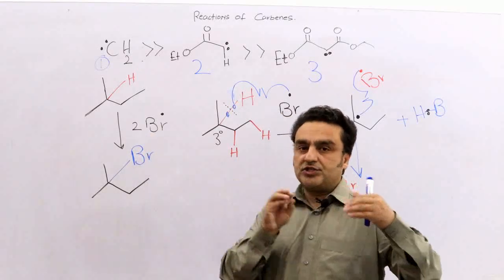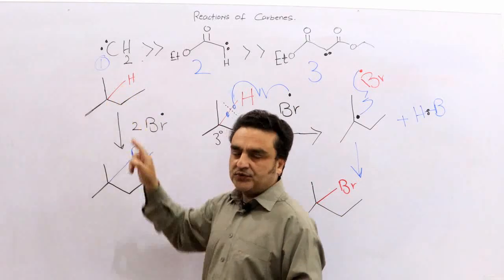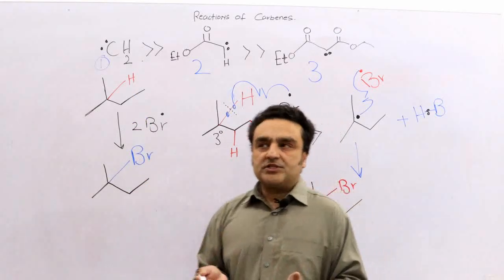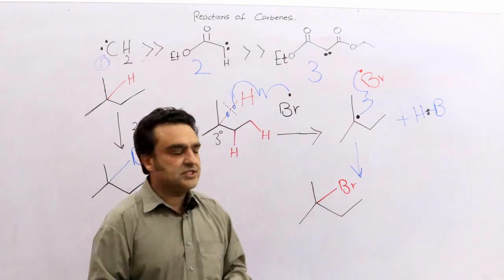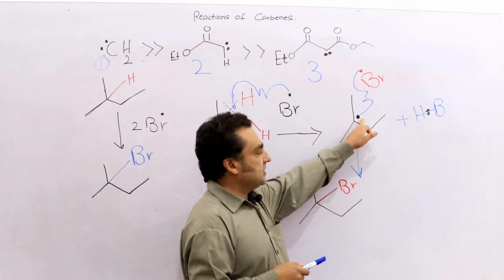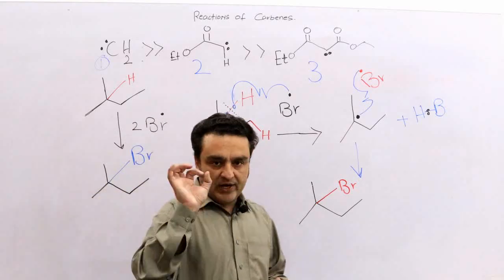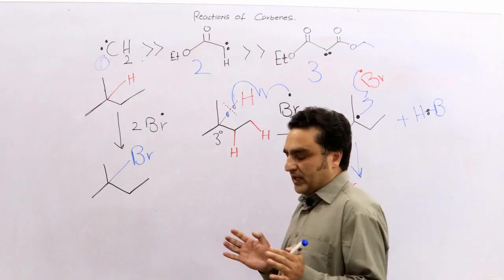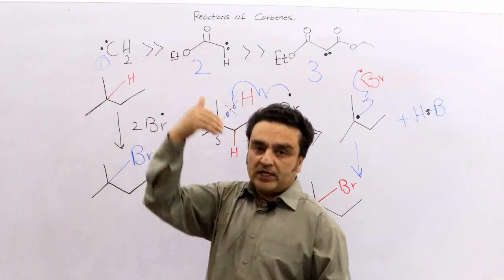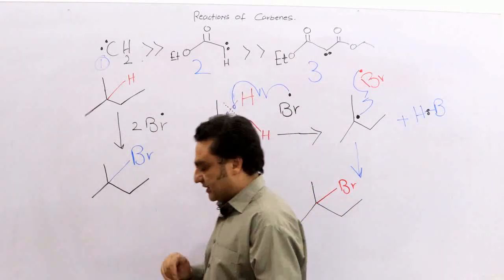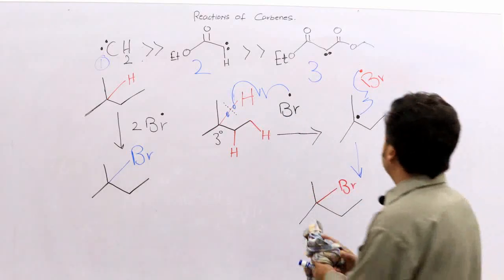So it seems that bromine is more selective — it attacked the hydrogen on the tertiary carbon. This is because the tertiary radical is more stable, as you may have studied in previous courses. The tertiary radical is formed, bromine combines with it, and the product is produced. Now I am going to connect this with carbene selectivity — why those carbenes are more selective. This is now becoming a little bit clearer.